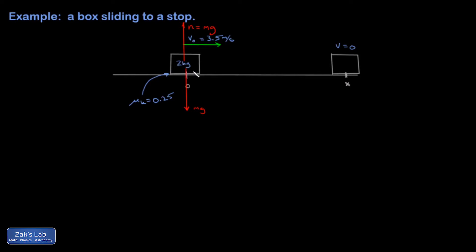And the reason this thing slows down is because there's an acceleration pointing to the left caused by a force pointing to the left. And that's the kinetic friction force, Fk, given by mu k times the normal force.